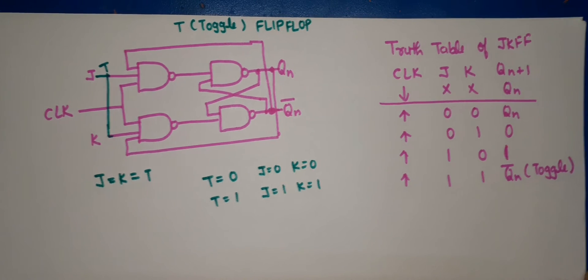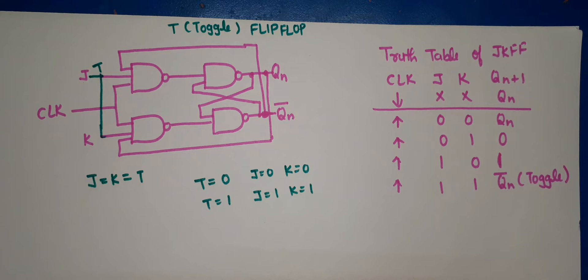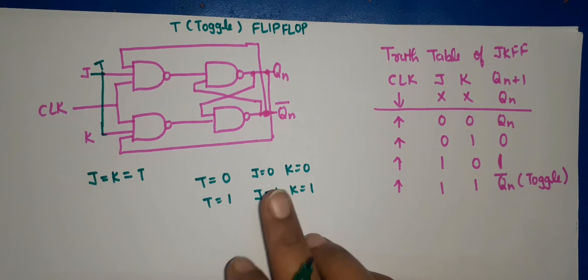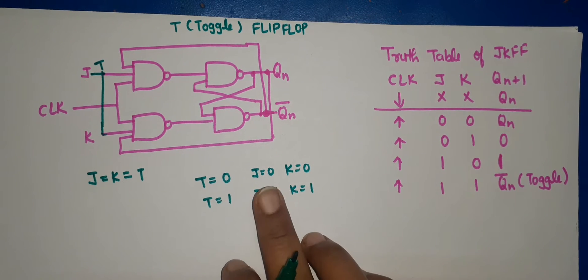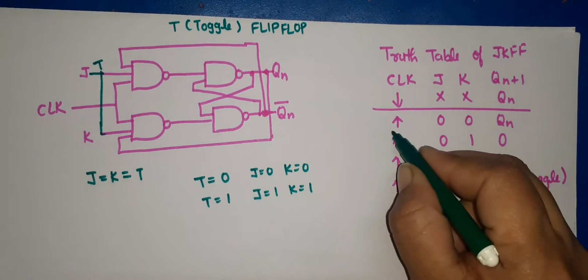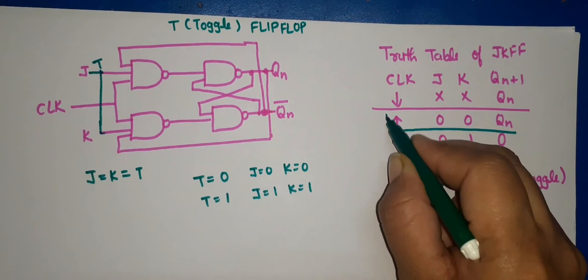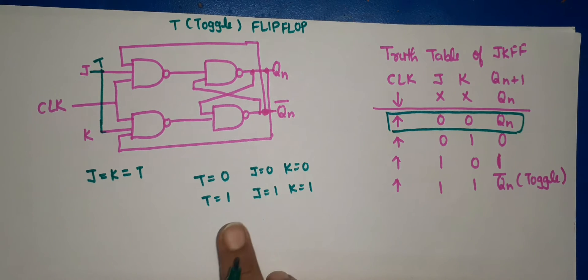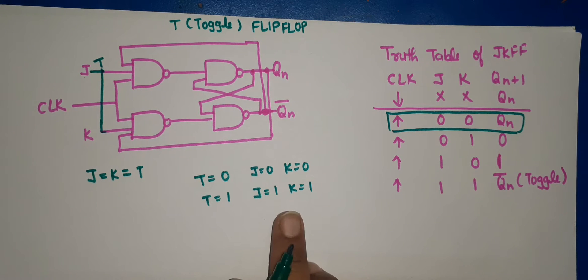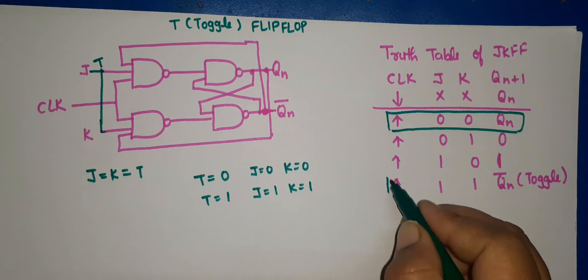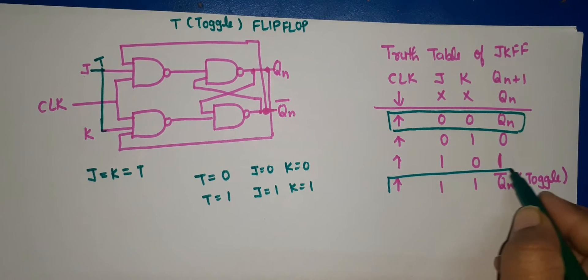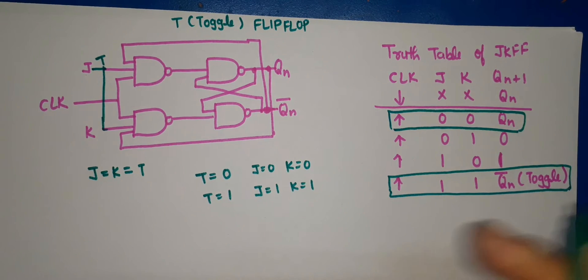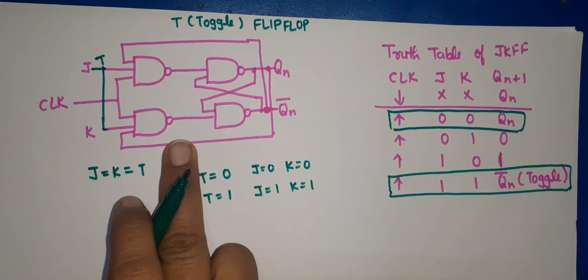If we check the table of JK flip-flop, we can identify the relevant conditions. The condition when both inputs are 0 corresponds to one row, and there is one condition when J and K both will be 1. These are the two conditions that will exist in our T flip-flop case.